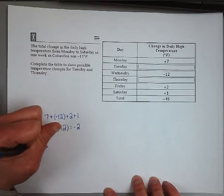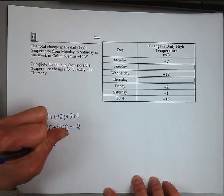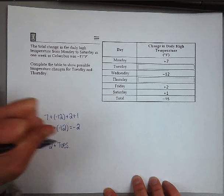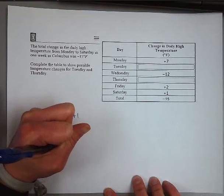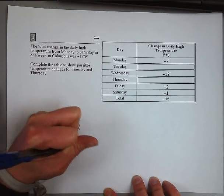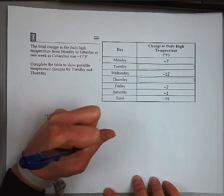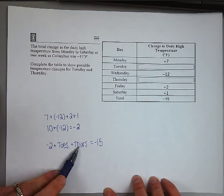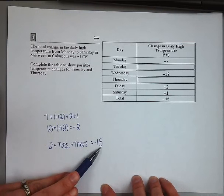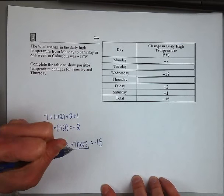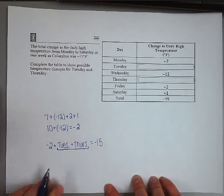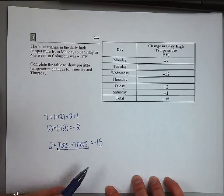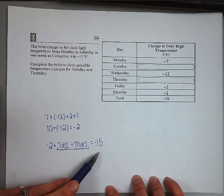That means negative two plus the change for Tuesday plus the change for Thursday is going to total negative fifteen. The change for the other four days combined with Tuesday and Thursday gives us negative fifteen. So think about what plus negative two gives us negative fifteen, and go ahead and try that on your own.